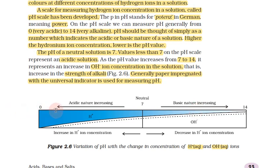On the pH scale, from right to left, acidic nature decreases. From left to right, hydrogen ion concentration decreases and acidic nature decreases while pH increases. As acidic nature increases, pH decreases. As basic nature increases, pH increases.